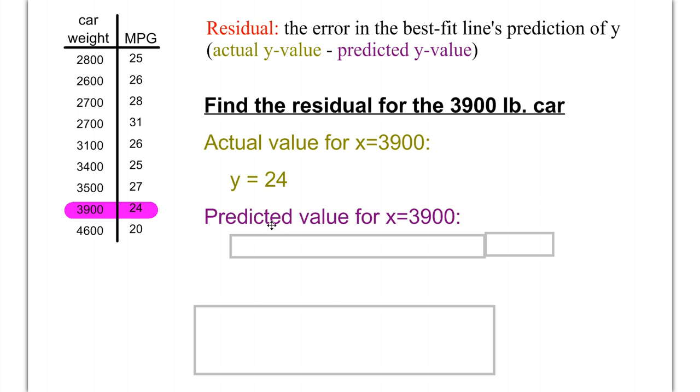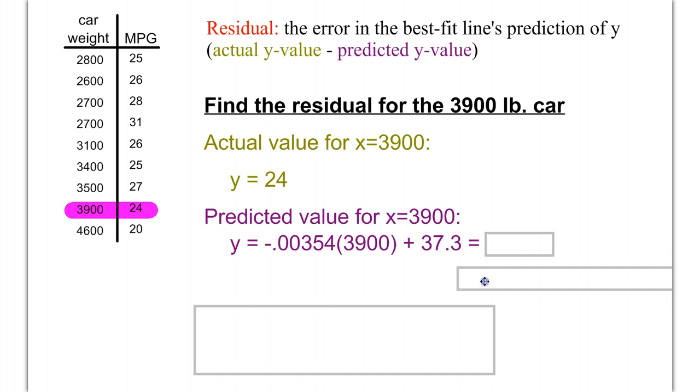Then we find the predicted value for a 3,900-pound car. We do that by plugging it into our linear regression line. So, y is going to be equal to our slope, negative .00354. We plug in x of 3,900, because that's what we're trying to predict. And then we add in our y-intercept, 37.3.